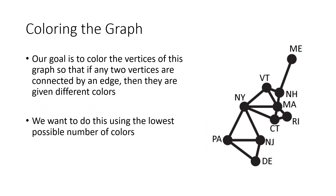When we color the graph, we color the vertices so that if any two vertices are connected by an edge, they are given different colors. For example, Maine might be colored blue, and then New Hampshire — because it shares a border with Maine — would have to be a different color, like orange. We go through the graph coloring vertices so that no two adjacent vertices share a color, with the goal of doing this with the fewest possible colors.